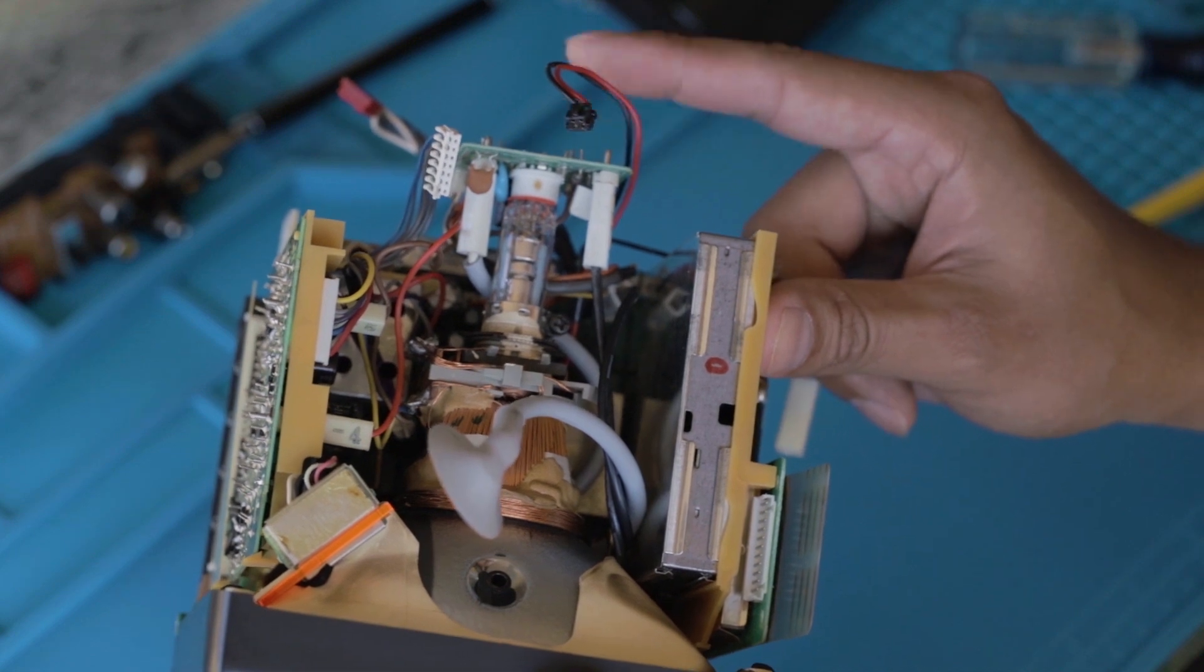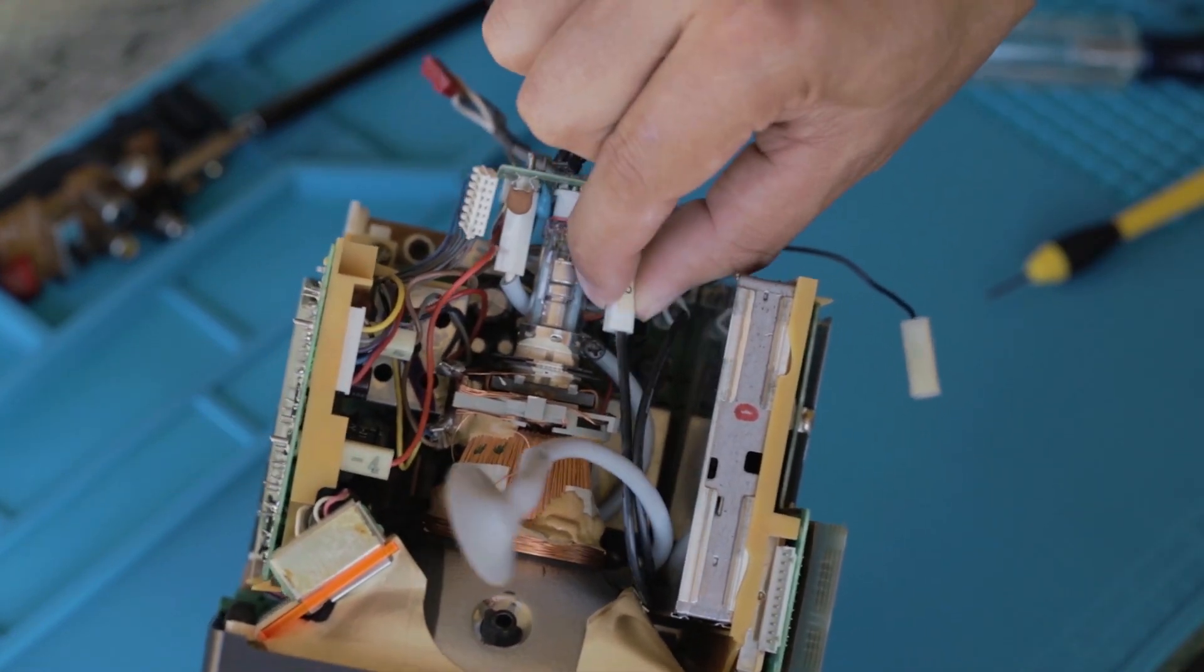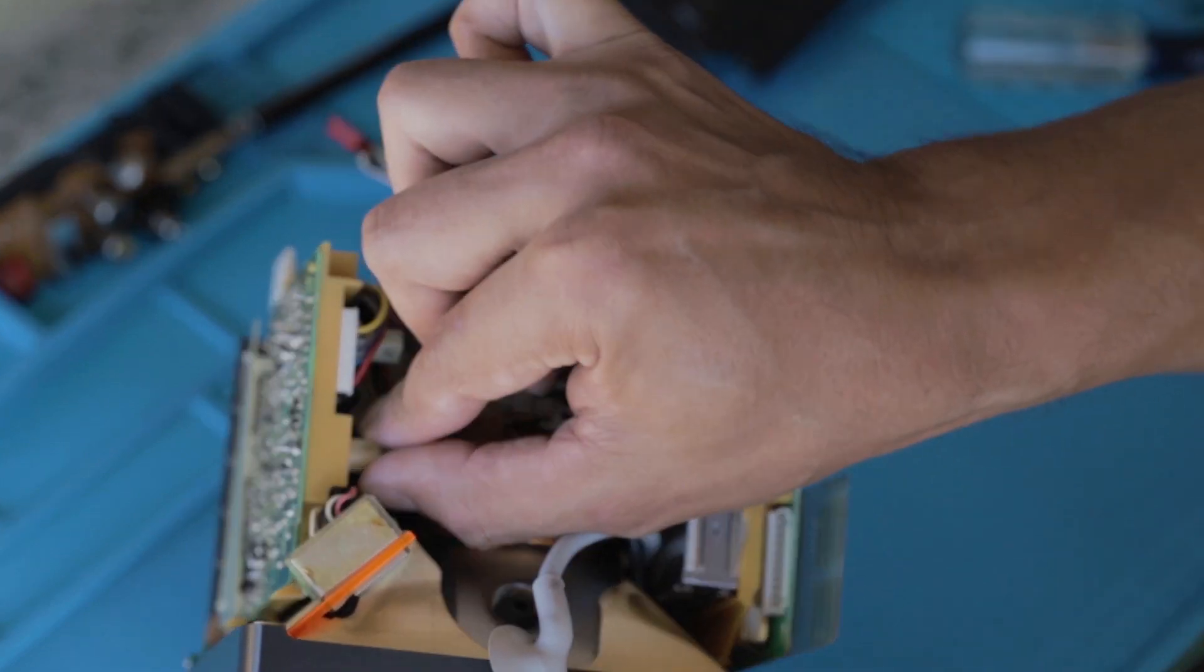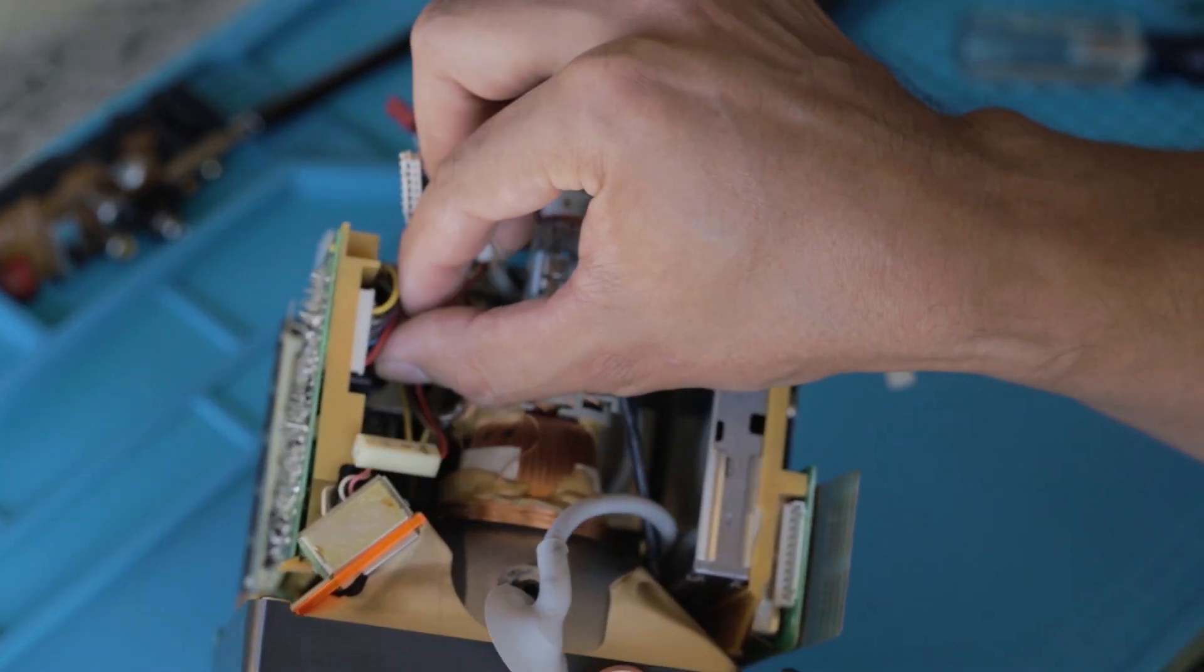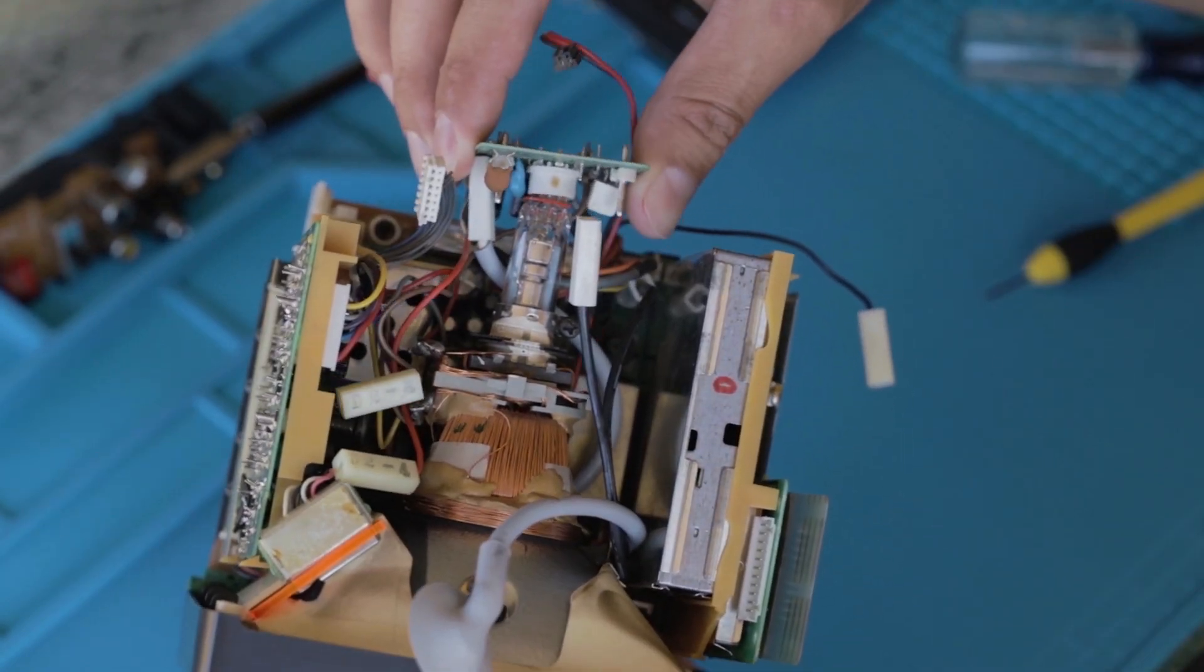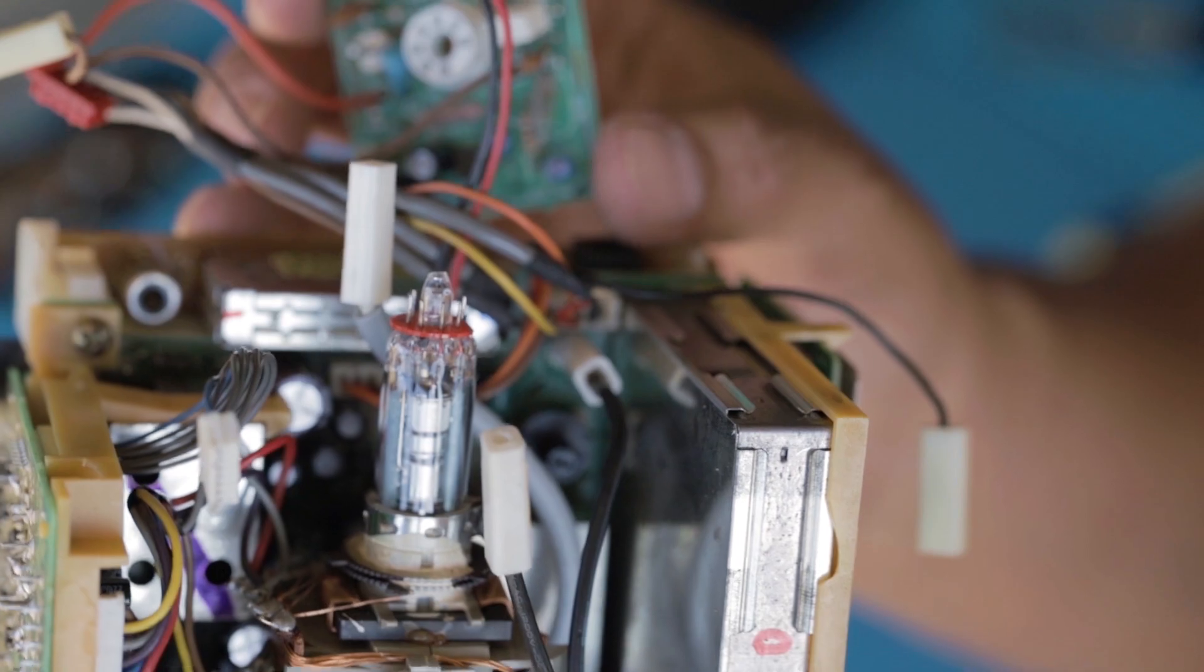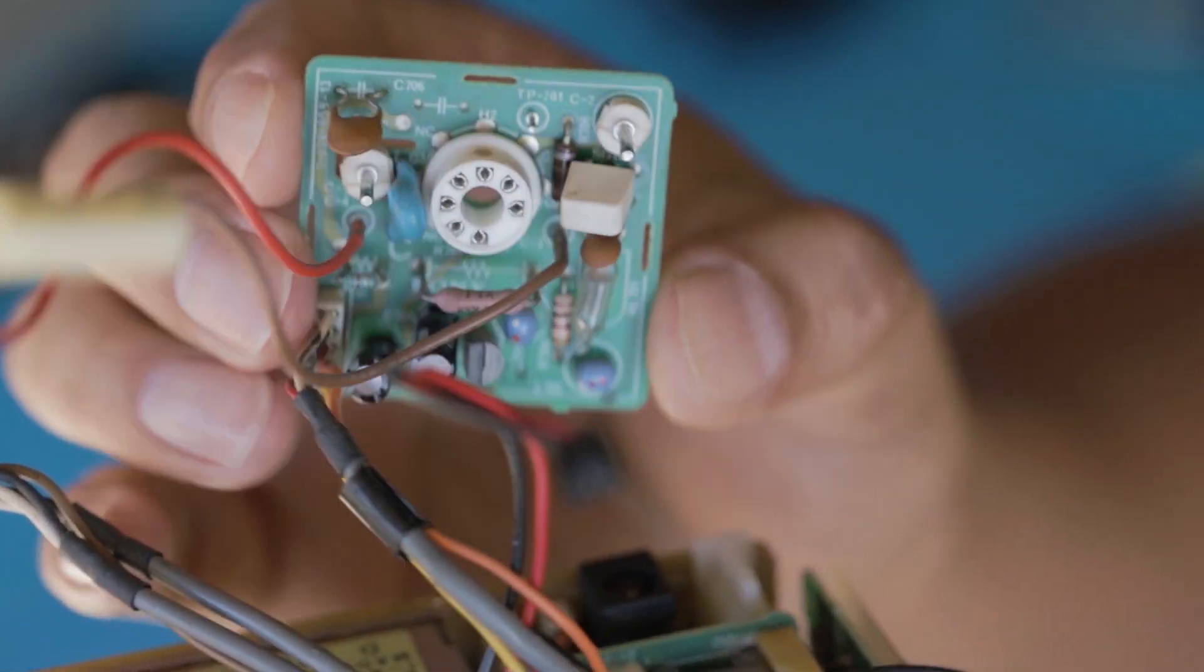For the next step, we'll remove the neck board. Pop off four ground wires. And then we can gently remove the neck board from the tube. Here's a close-up look at the tube. Very short. And a close-up look at the neck board.